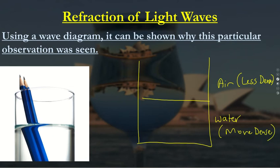Imagine we have a ray of light hitting the interface here. According to the way light bends, we assume there is an imaginary line called the normal, which is always at 90 degrees to the point of contact. The point of contact we have here is this point, and we're going to call this our incident ray of light.